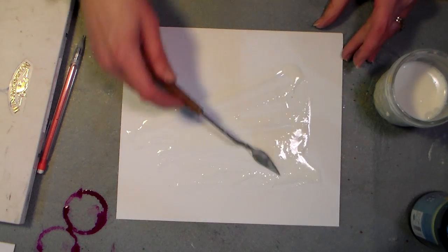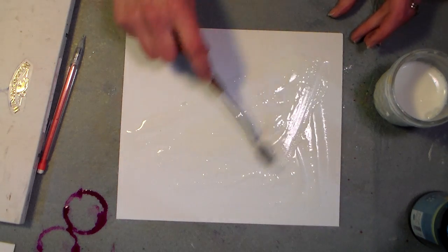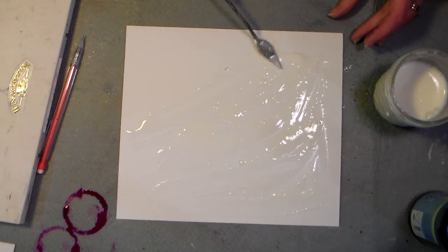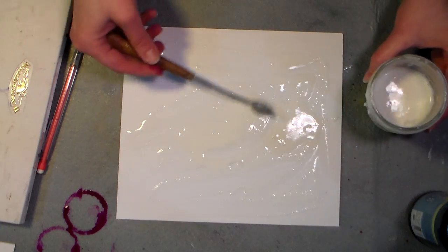I'm working on just a scrap of mat board. You can use cardboard. Actually all my experiments I did with food coloring and cardboard from my recycling bin because I didn't want to waste anything good.